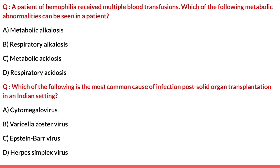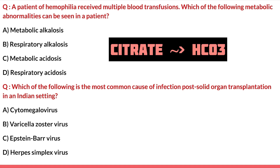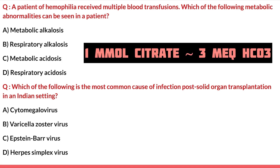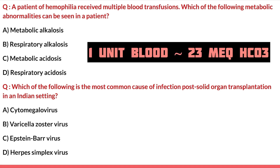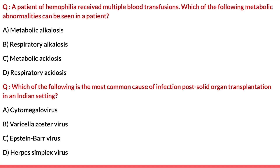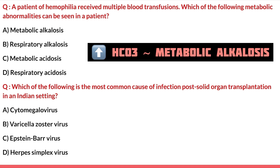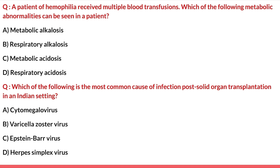A patient of hemophilia received multiple blood transfusions. Which metabolic abnormality can be seen? Options are metabolic alkalosis, respiratory alkalosis, metabolic acidosis, and respiratory acidosis. Blood contains the anticoagulant sodium citrate, which in the transfused blood gets converted to bicarbonate, ultimately leading to metabolic alkalosis. Each millimole of citrate generates around 3 milliequivalents of bicarbonate — about 23 milliequivalents per unit of blood. So multiple transfusions lead to significant bicarbonate accumulation, making metabolic alkalosis the most common abnormality. The correct answer is option A: metabolic alkalosis.